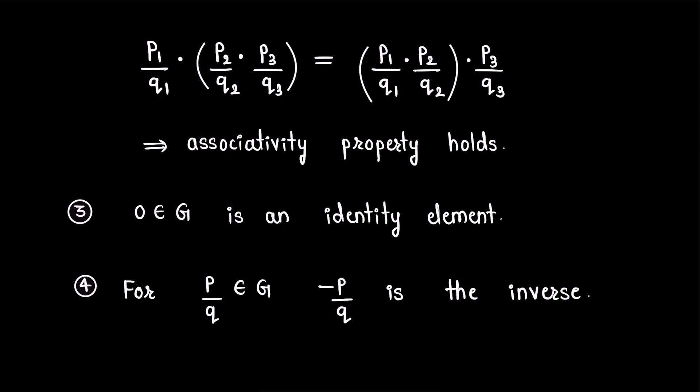Thus the given set G — the set of all rational numbers with odd denominators — with the binary operation of addition of rational numbers, satisfies all four group axioms and therefore becomes a group. Thank you.